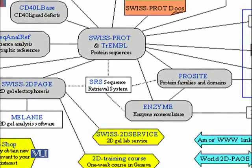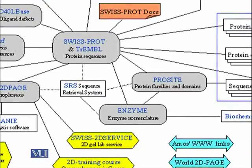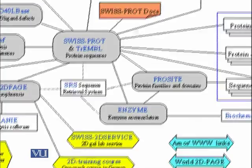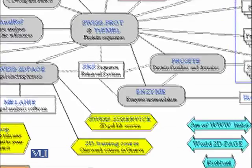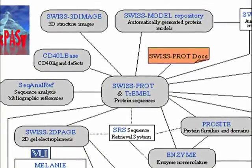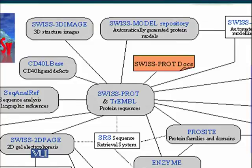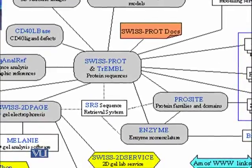On the other side, you have ProSite, where protein families and domains information is provided. You also have the enzyme database with enzyme nomenclature. And if you look on top, you also have the 3D structure, that is Swiss 3D image. If you click on the proteomics category within the XPCI website, you will arrive at all of these software, databases, and tools. So this is just an overview of a few of them.